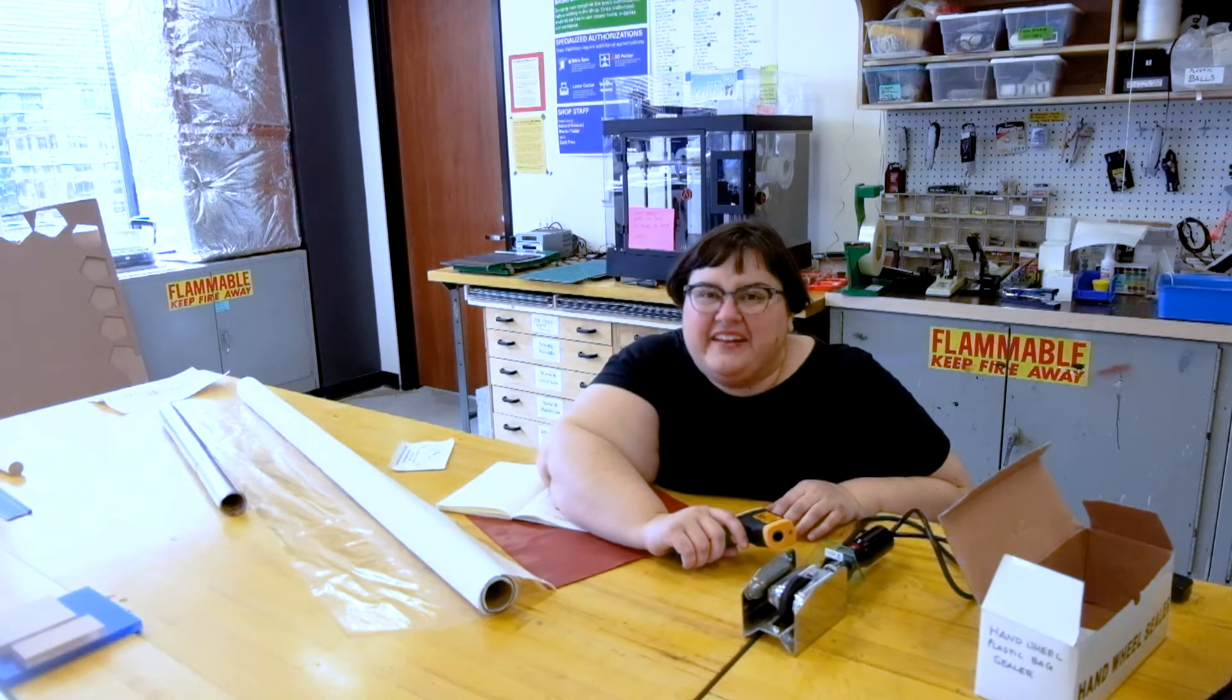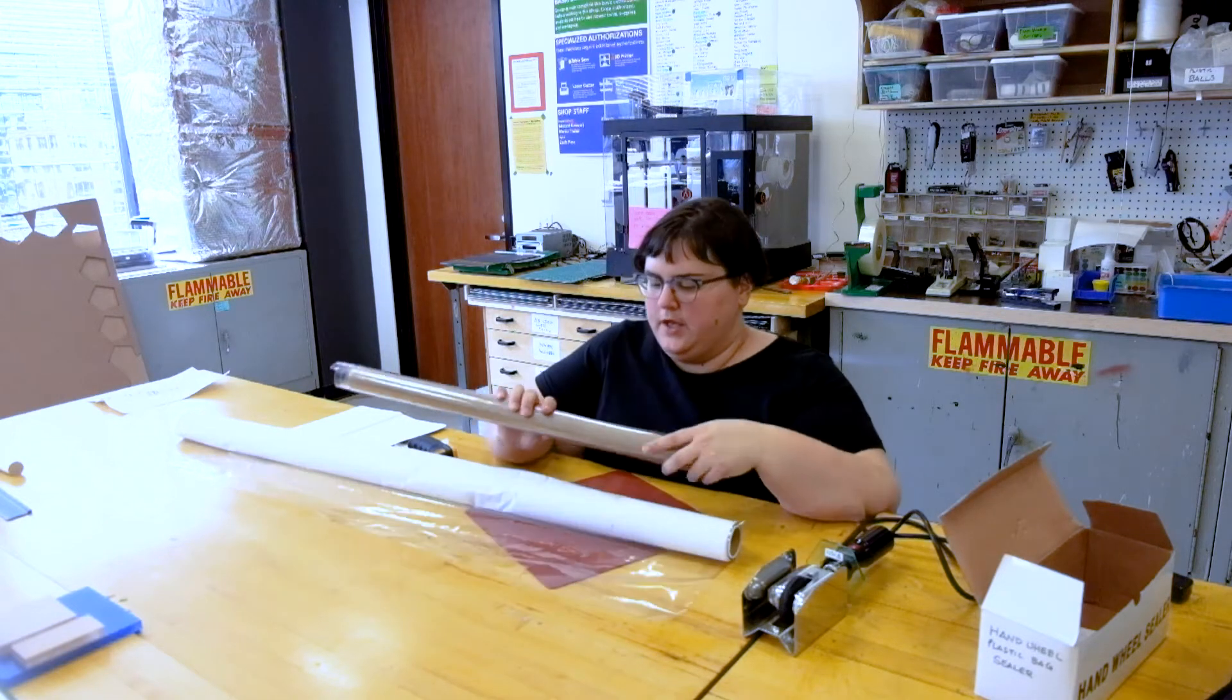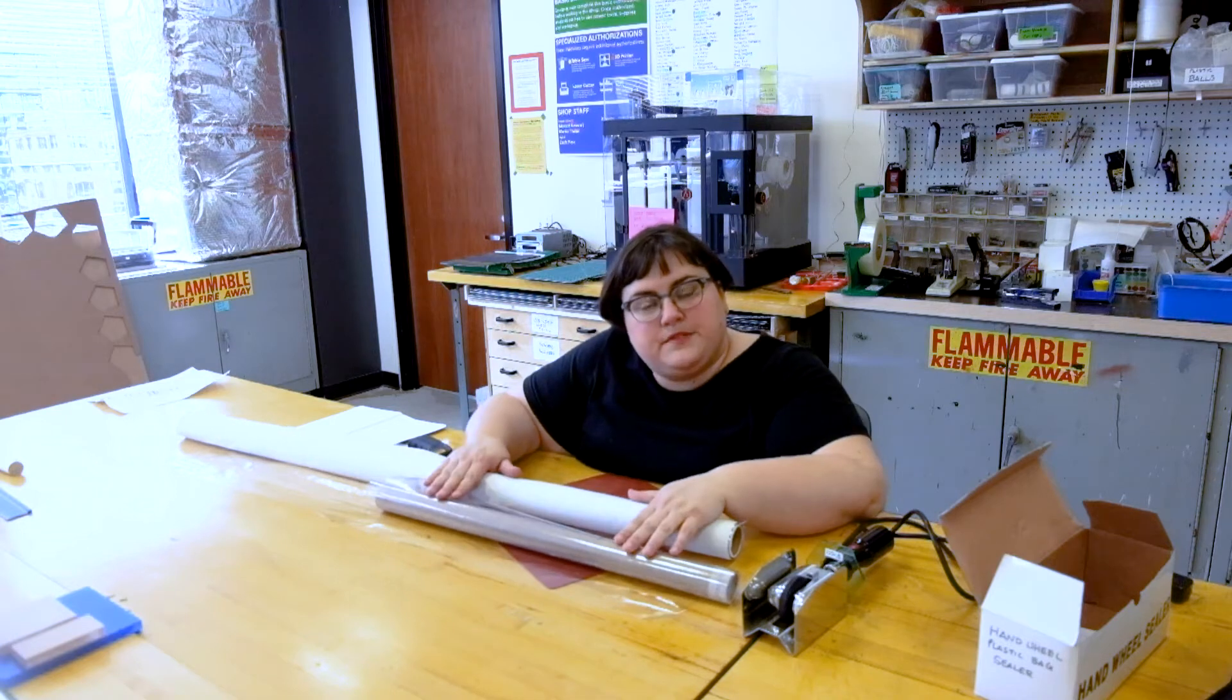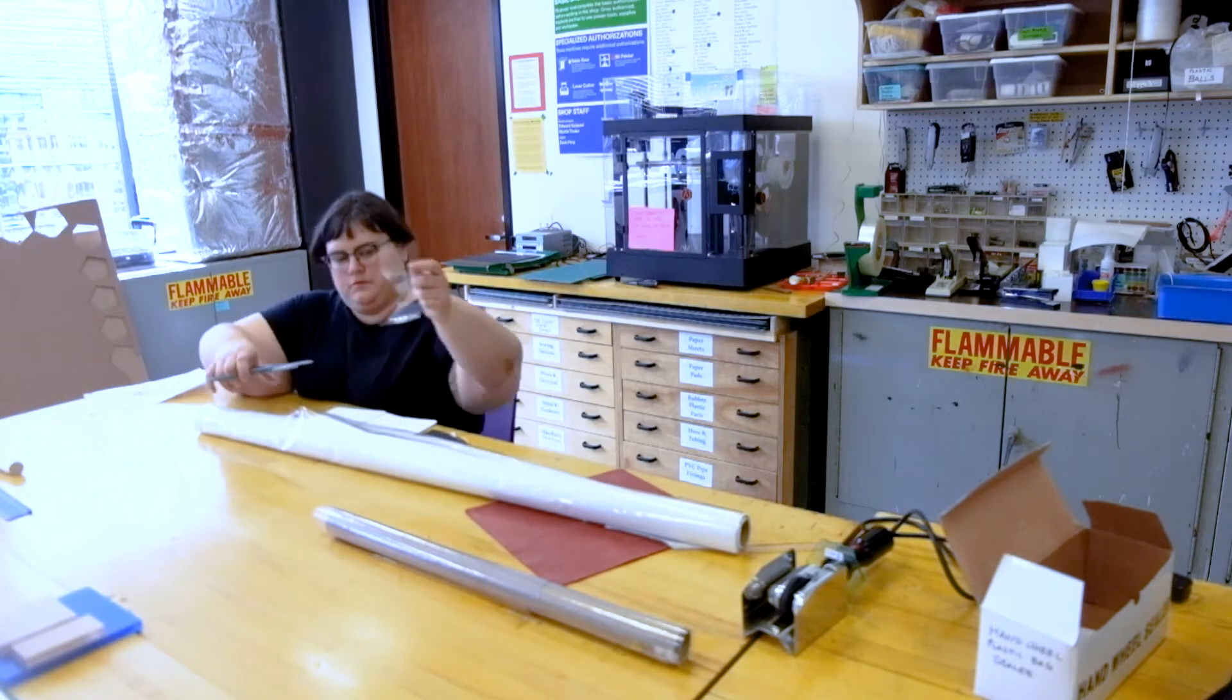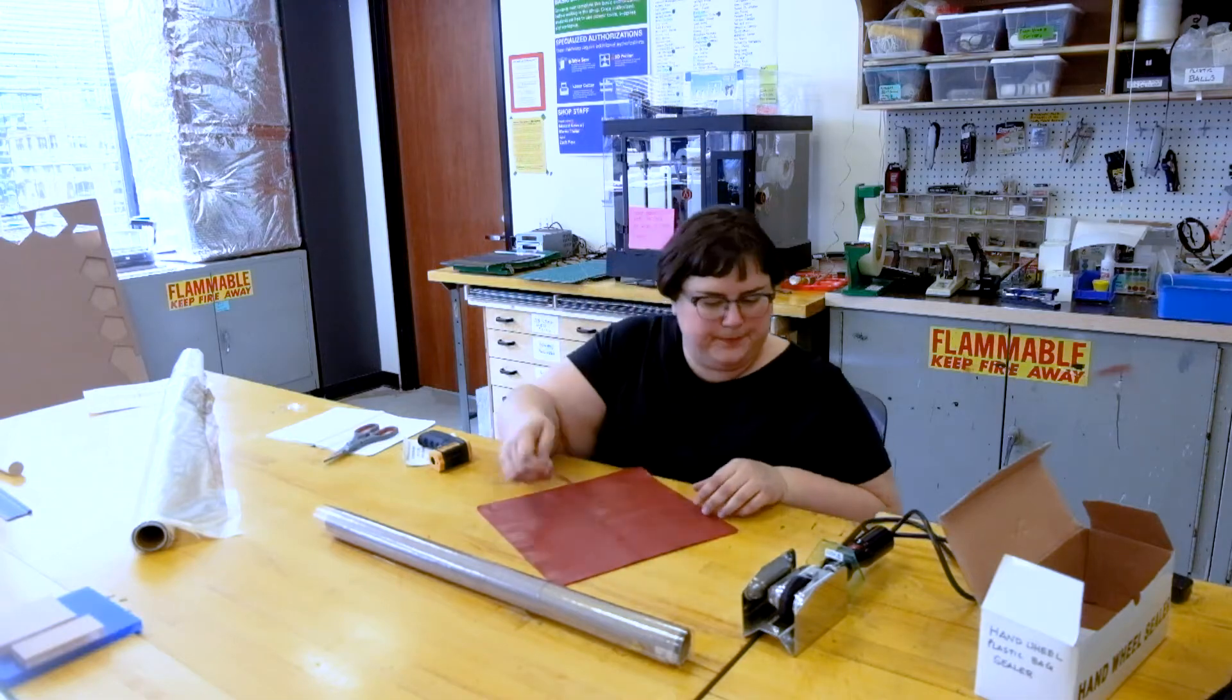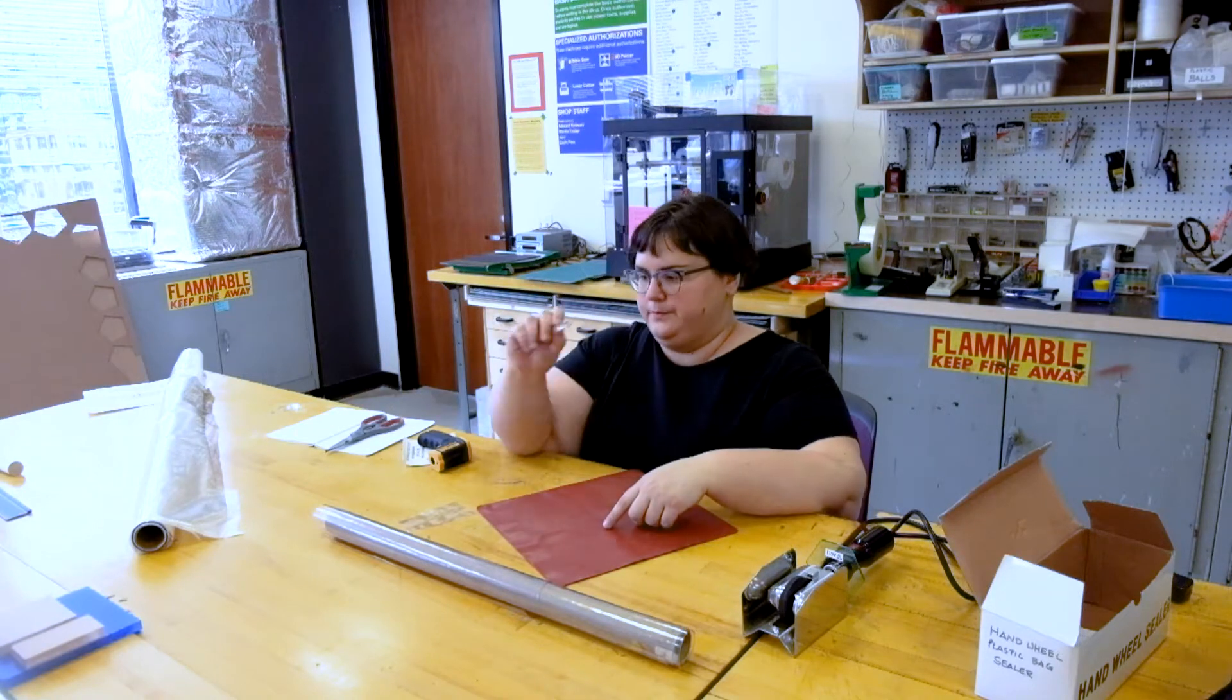I have two different thicknesses of vinyl. This very thin material that I made that giant saddle shape out of, and this rather thicker material that I just found in the shop today. So I'm going to cut out some simple shapes for us to play with. There's the thin vinyl, and here's the thick vinyl.